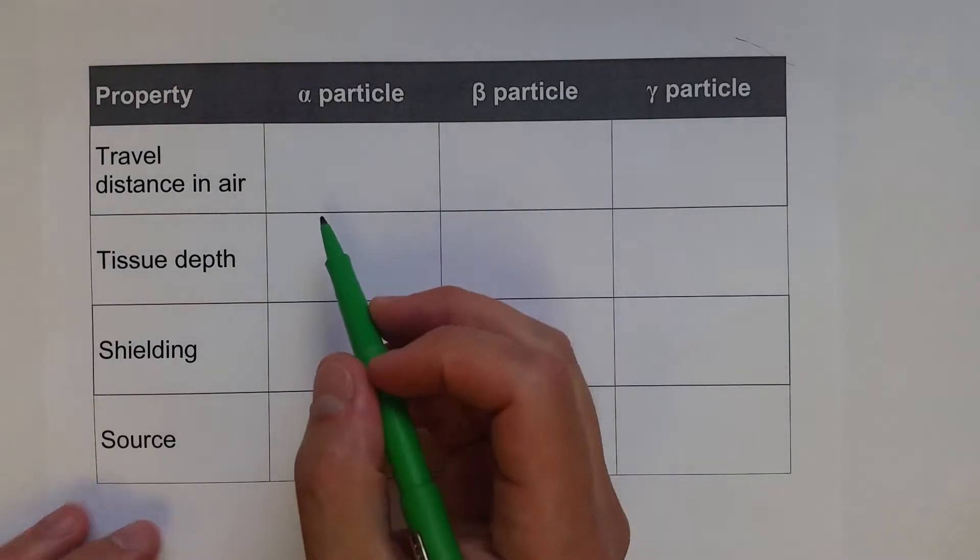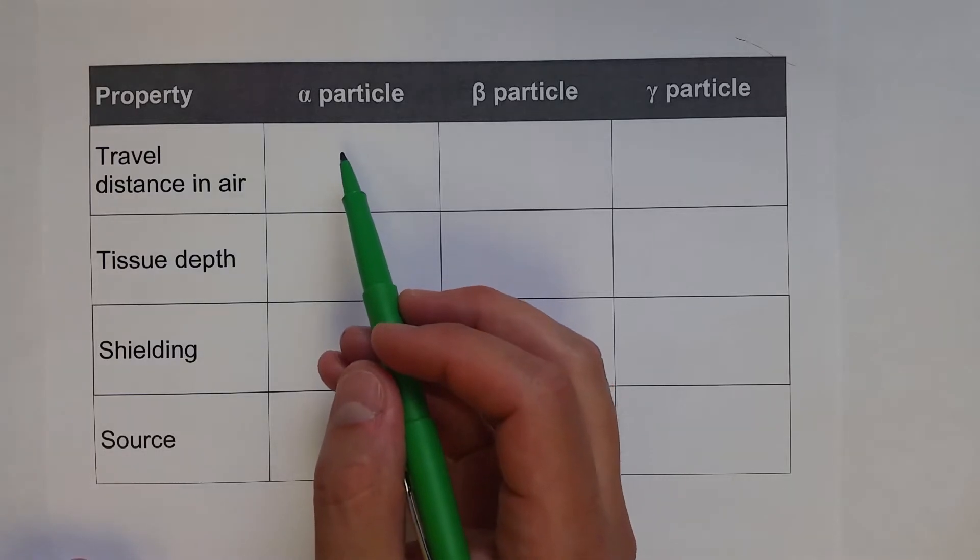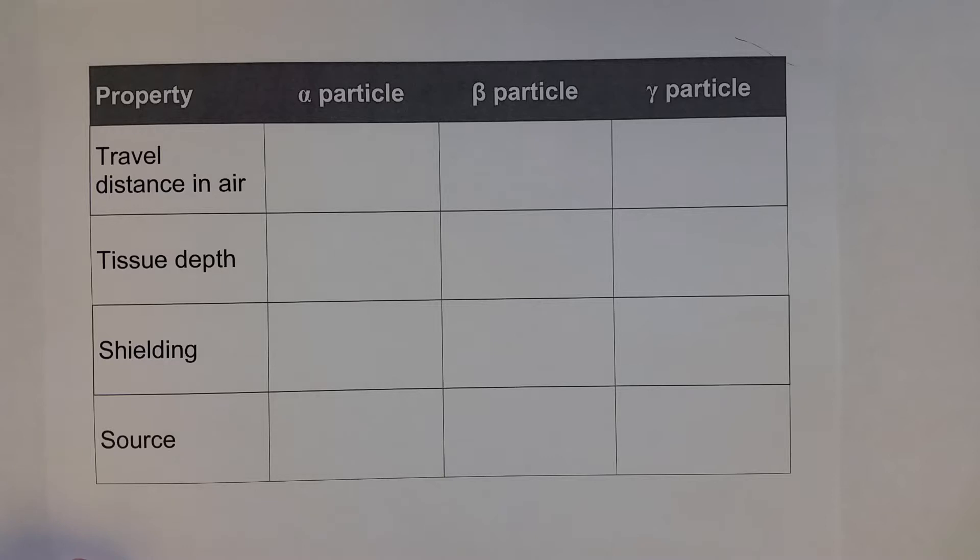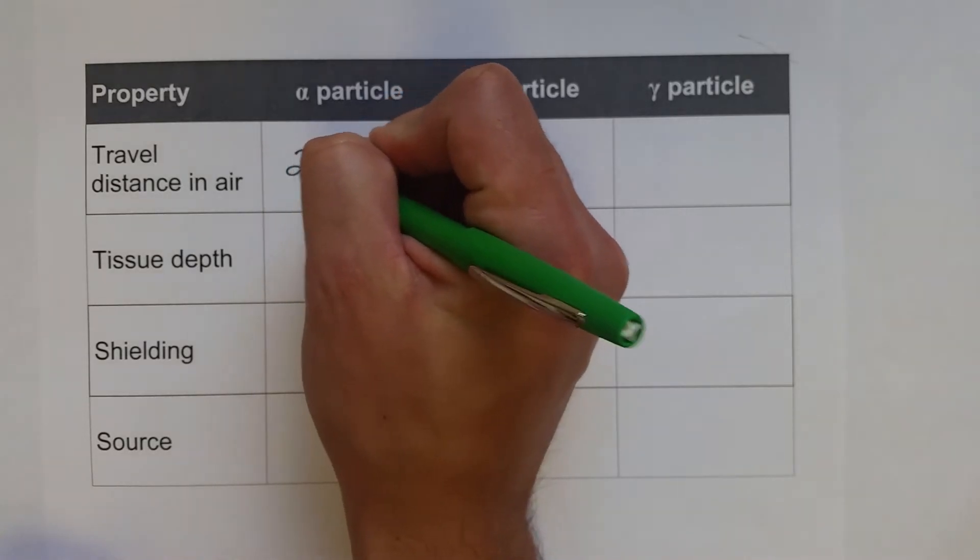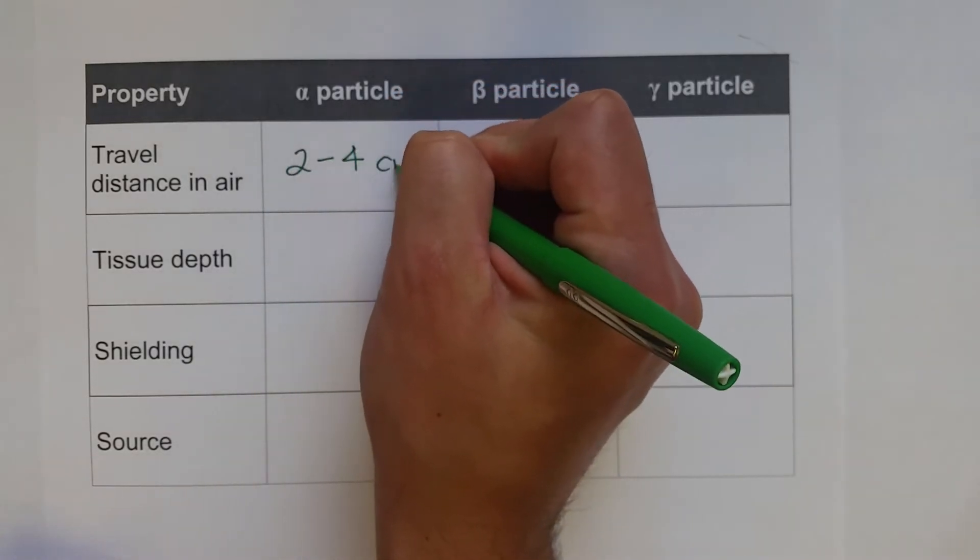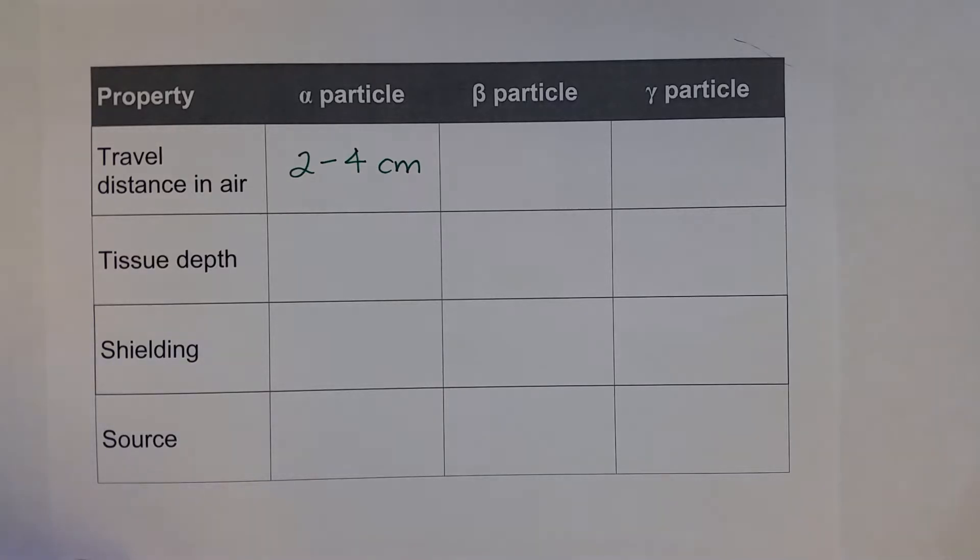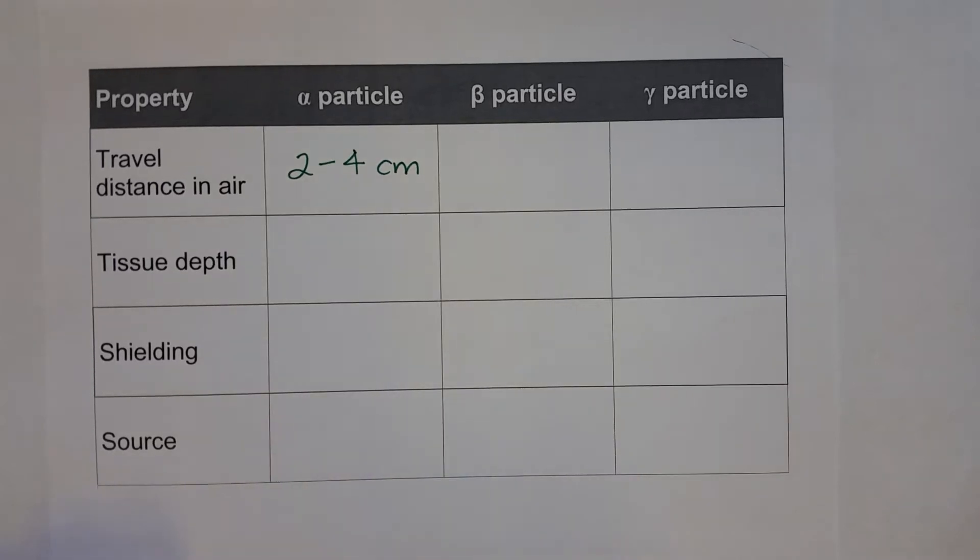The alpha particle is the largest particle that's typically emitted by nuclear radiation. Therefore, it runs into things quite a bit more often, and so it has the lowest or the smallest travel distance in air, approximately 2 to 4 centimeters. So it doesn't travel very far, but it does have the highest ionizing power of all the types of radiation.